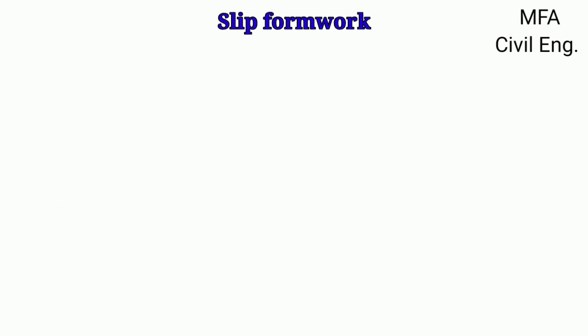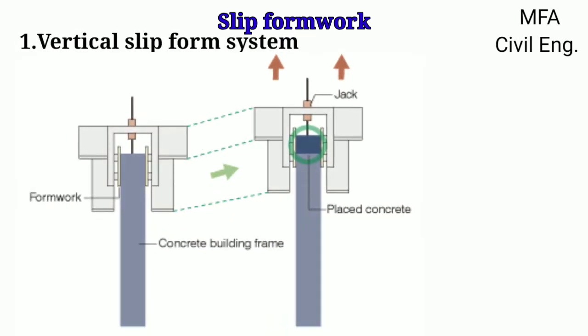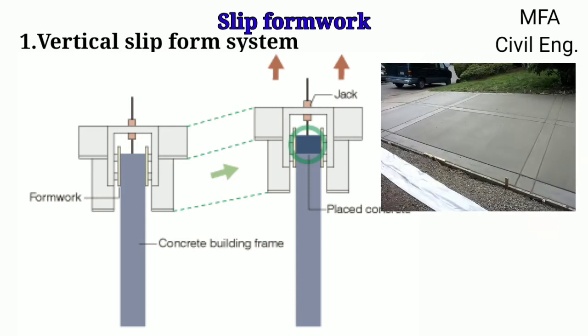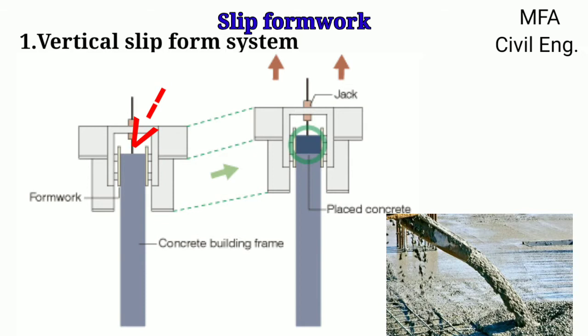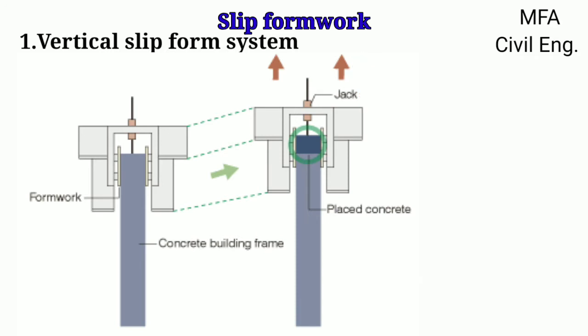Vertical slip form relies on the quick-setting property of concrete, requiring a balance between early strength gain and workability. The concrete needs to be workable enough to place into the formwork, yet strong enough to develop early strength so that the formwork can slip upward without any disturbance to the freshly poured concrete. As the concreting process continues, hydraulic lifters raise the form across the entire horizontal projection of the structure in a continuous upward sliding motion.